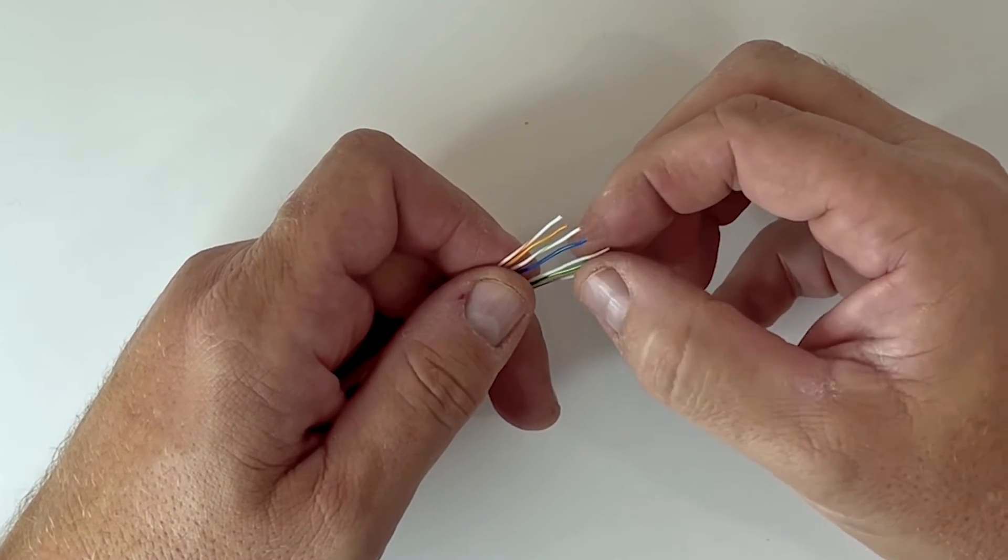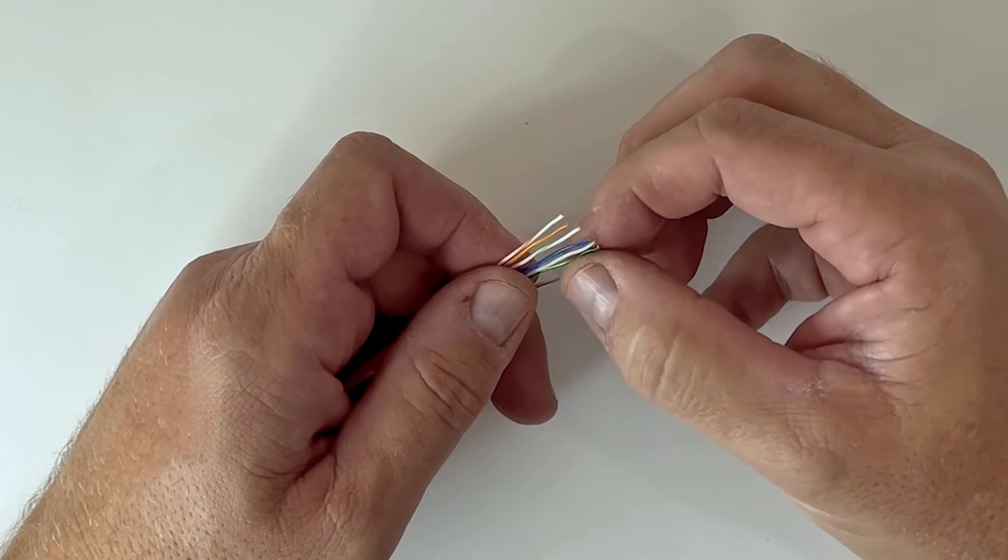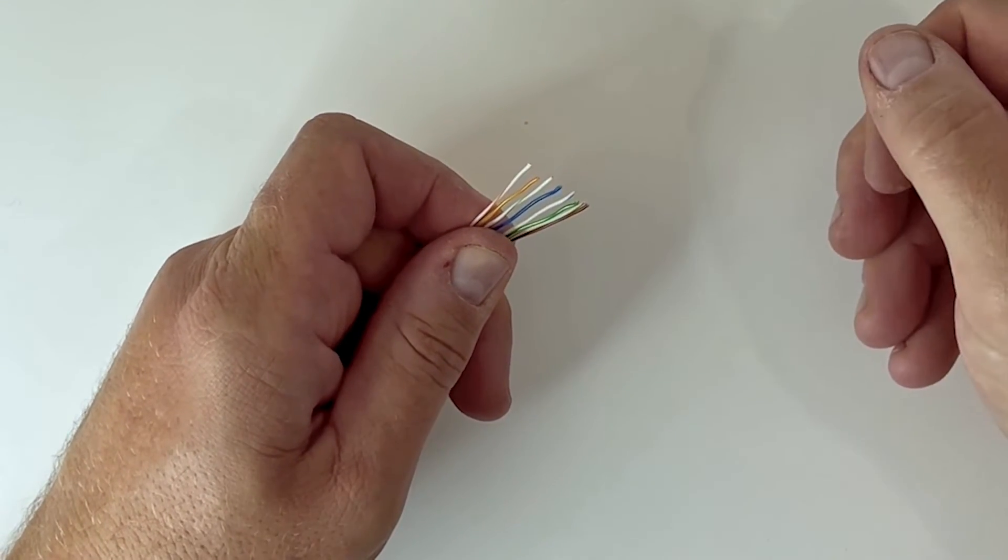If you have T568B in your wall jack, you need to have the same sequence for your CAT6 connector.